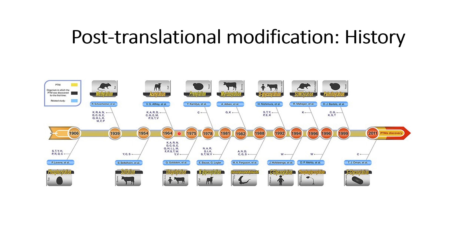The next post-translational modification that has been identified is acetylation, identified in 1964. Acetylation mainly occurs in the cytosol. More information about acetylation can be found in the references provided in the description.